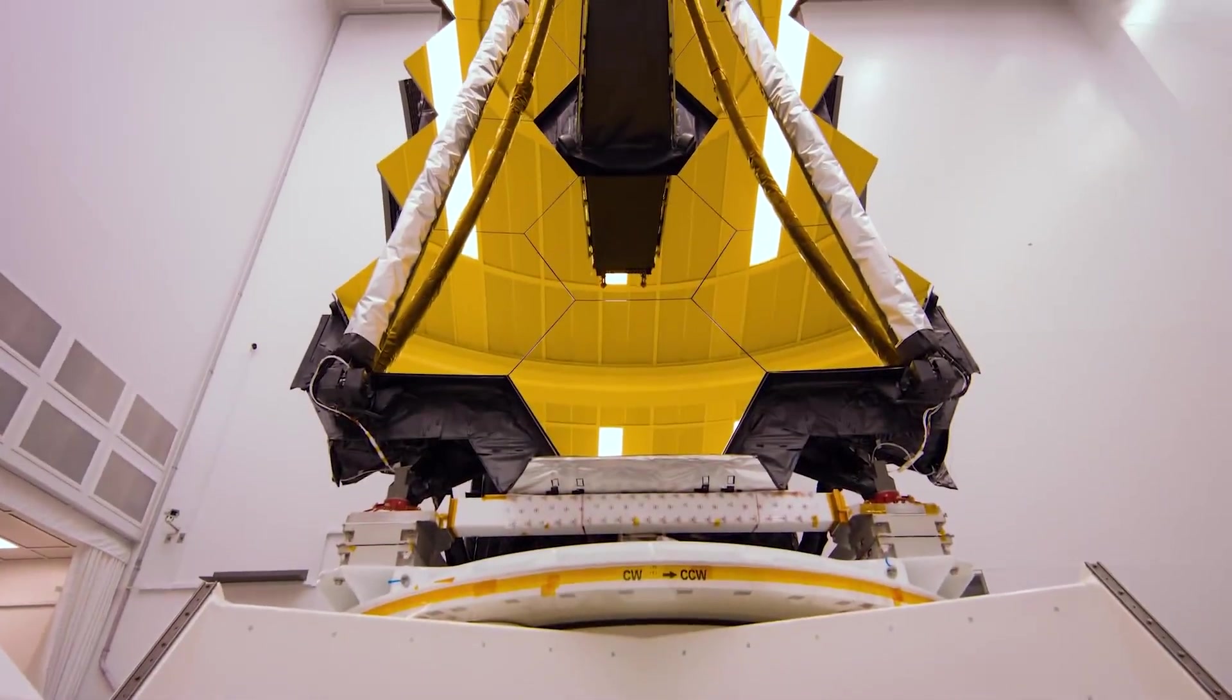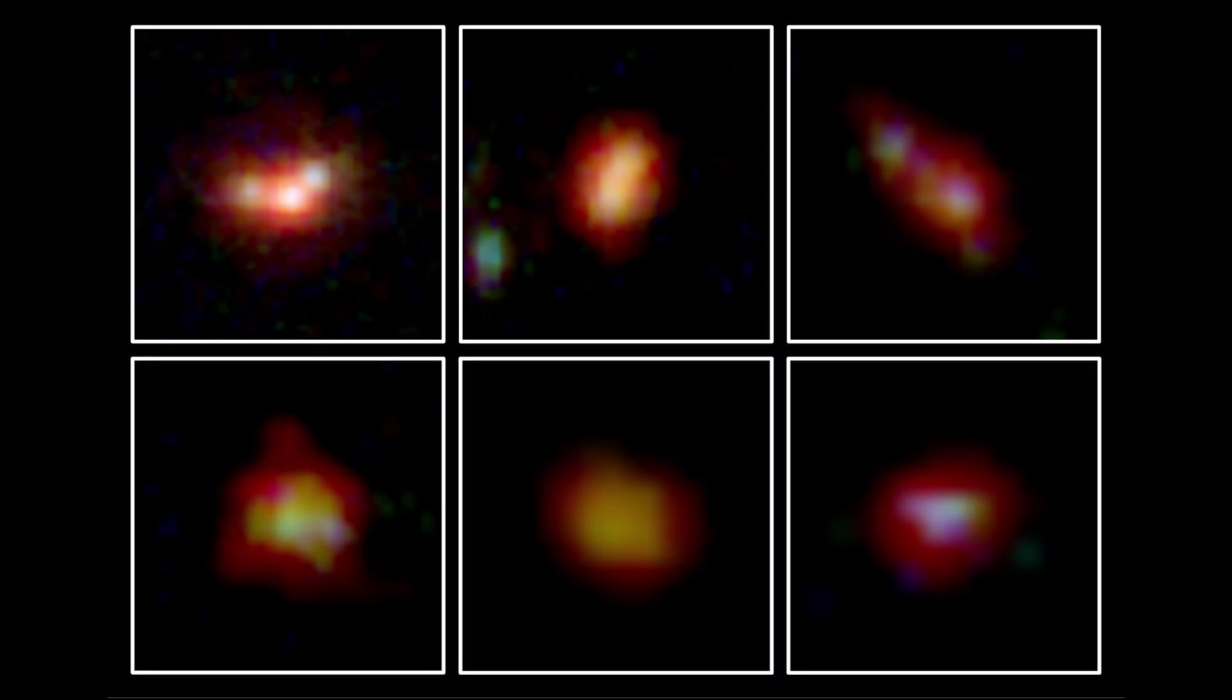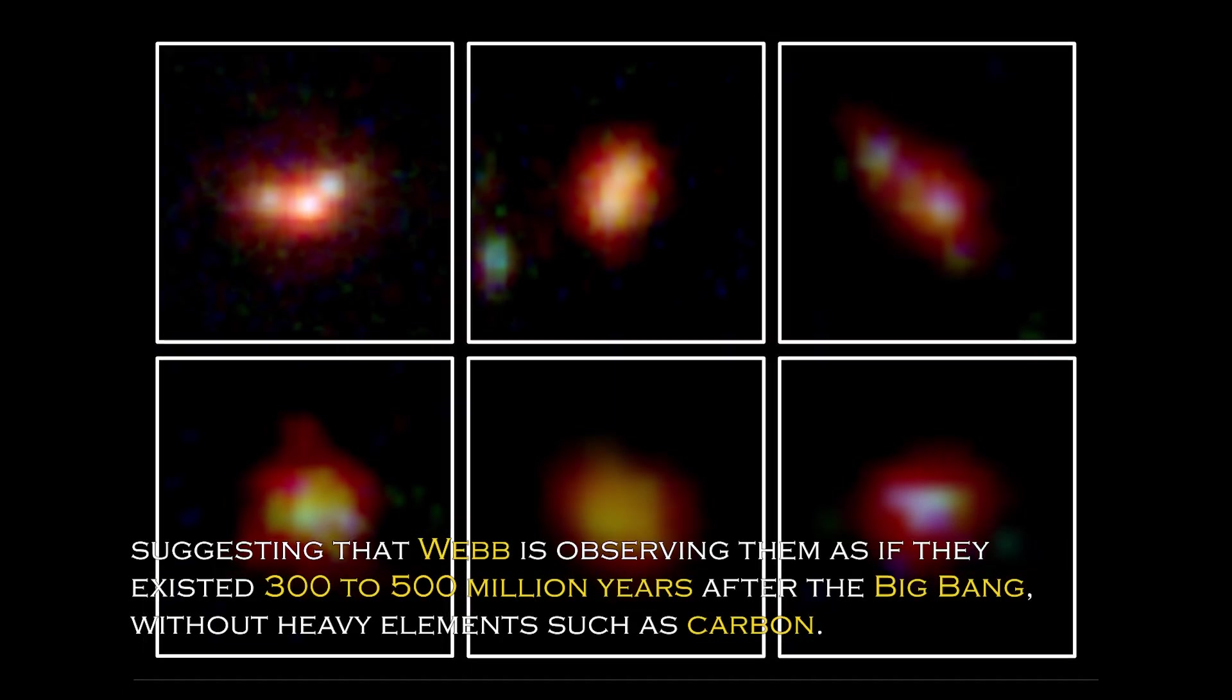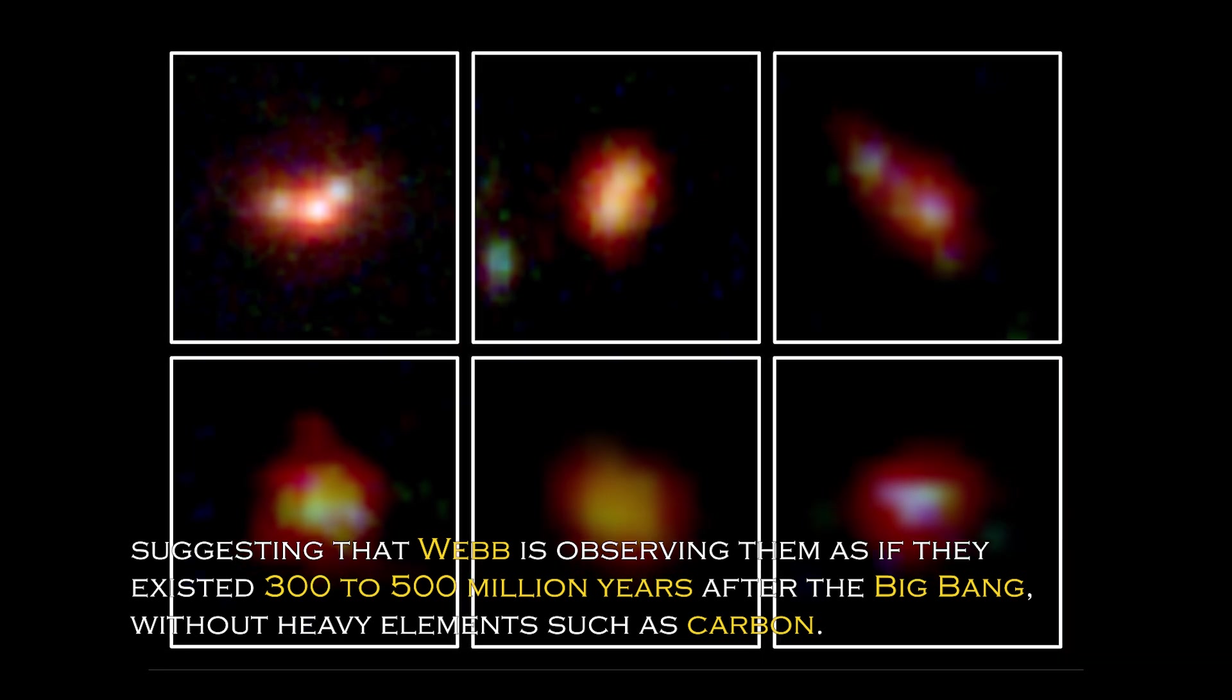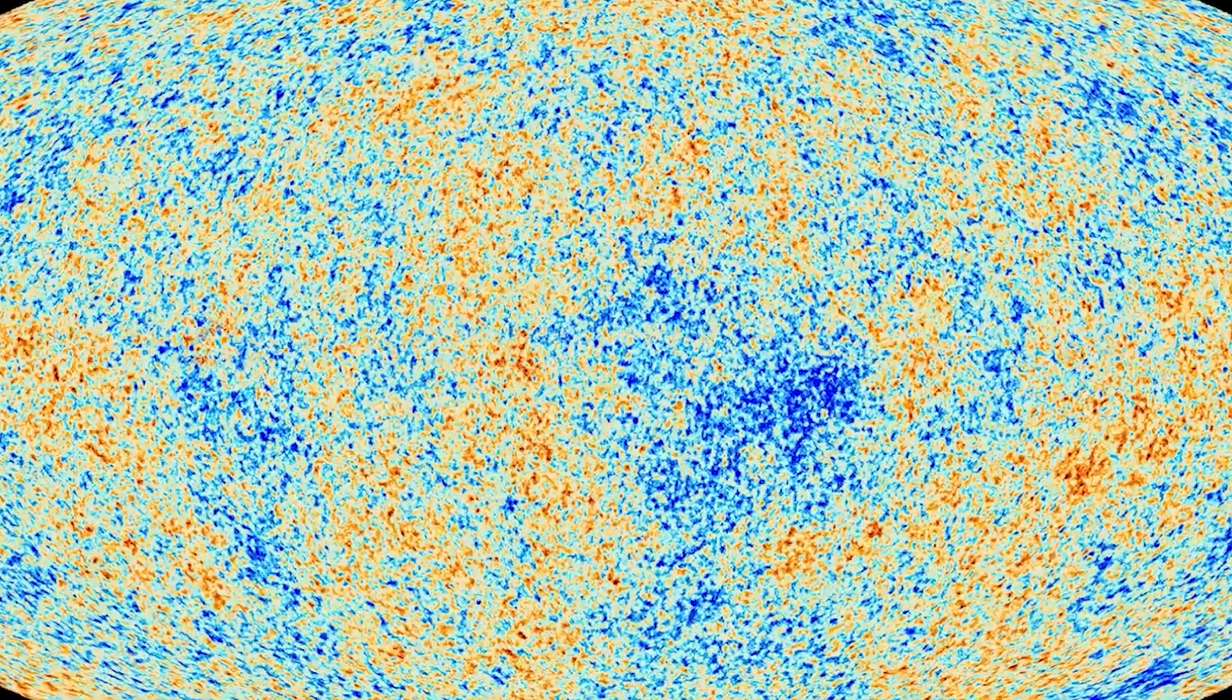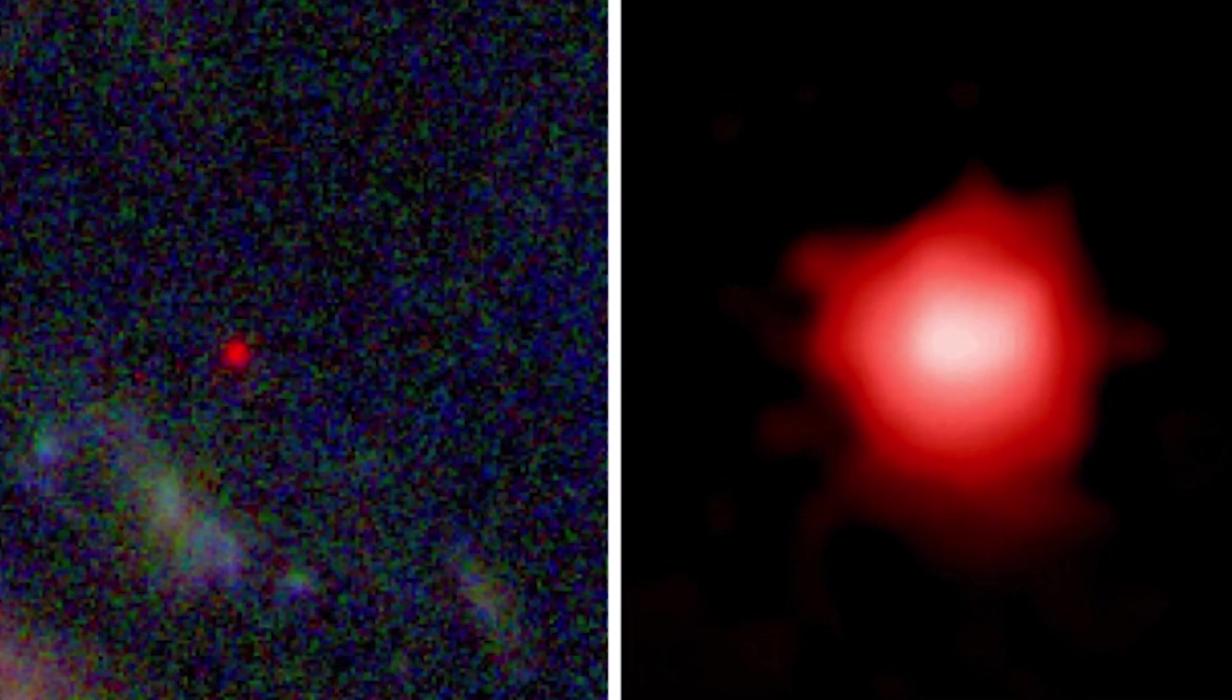Data obtained from Webb's spectrometer and near-infrared camera have revealed that four of the six primordial galaxies have extreme redshifts, suggesting that Webb is observing them as they existed 300 to 500 million years after the Big Bang, without heavy elements such as carbon. This is surprising since the universe is estimated to be 13.8 billion years old, and the existence of these galaxies suggests that we need to revise our understanding of the early universe.